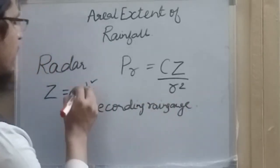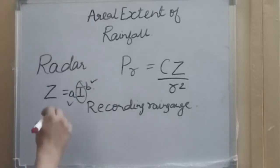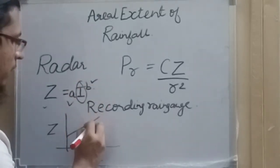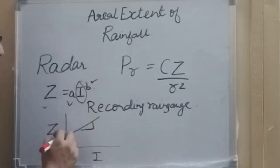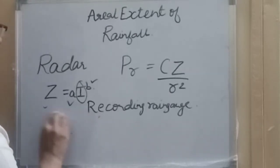From the rain gauge we can get the intensity of rainfall. We have the values of Z and I, and we prepare a plot between Z and I. Z will be on the y-axis and I on the x-axis. We prepare a logarithmic plot. The slope gives the value of b, and the intercept gives the value of a. In this way we can get the values of a and b.